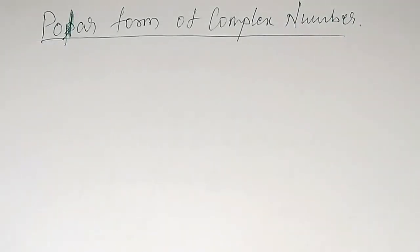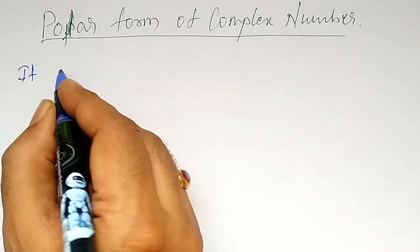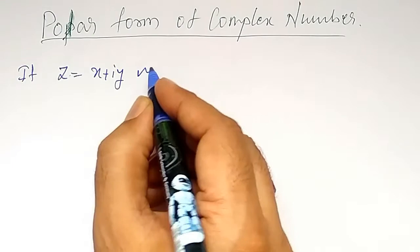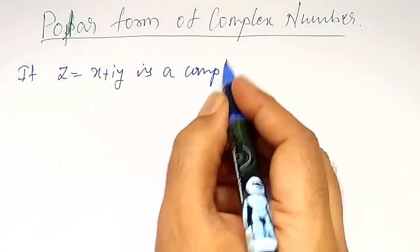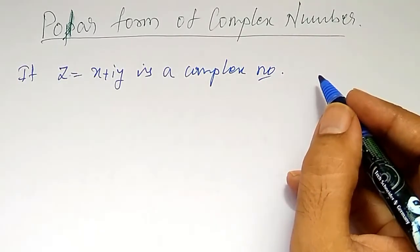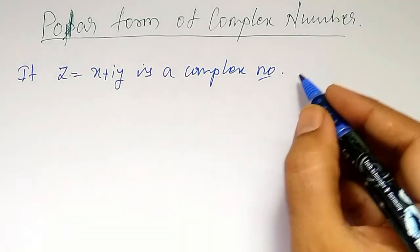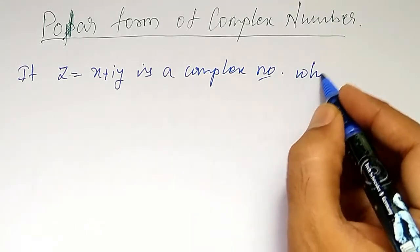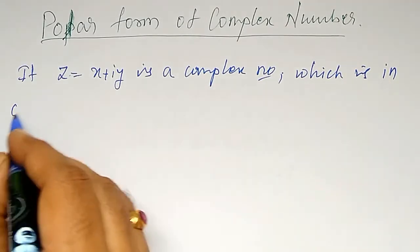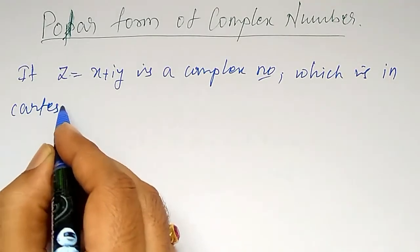In this video, I am going to explain about the polar form of a complex number and its properties. If z is equal to x plus iy, this is a complex number in Cartesian form.